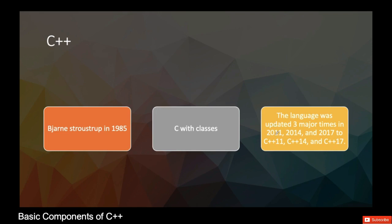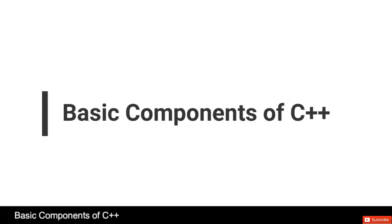So that's the peculiarity of C++. It was updated three times in 2011, 2014, and 2017 to different standards called C++11, C++14, and C++17.